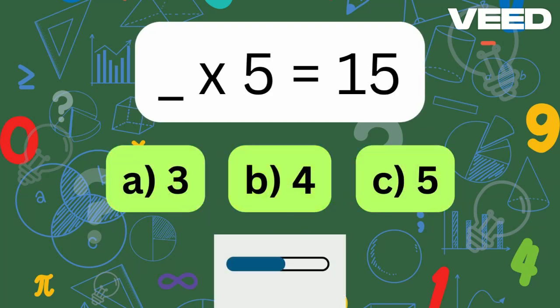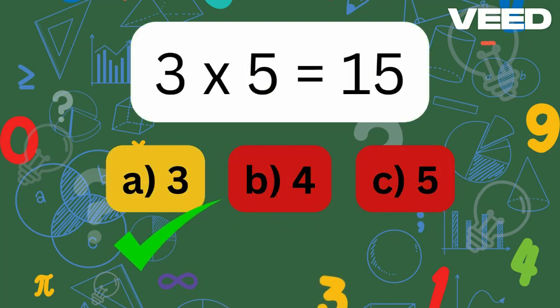What times 5 is equal to 15? Correct, 3 times 5 is 15.